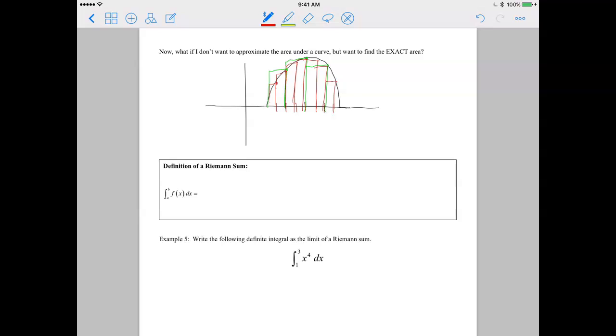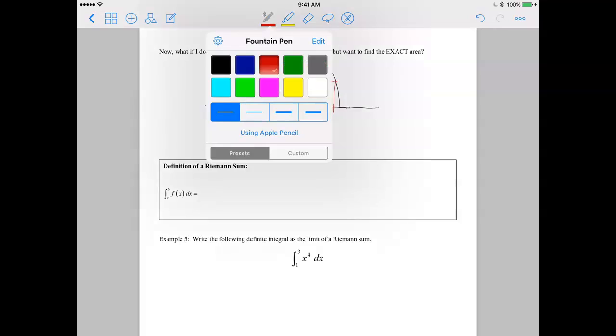Okay, so hopefully what you've noticed now is that my red is a much better approximation than my green is. Okay, so the green was catching a lot of area that was outside of the curve, and missing a lot of the area that was inside of the curve, and my red did a much better job.